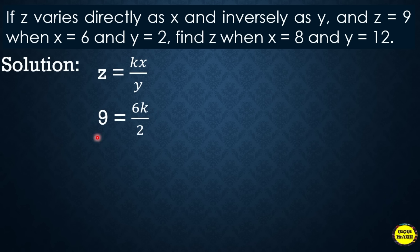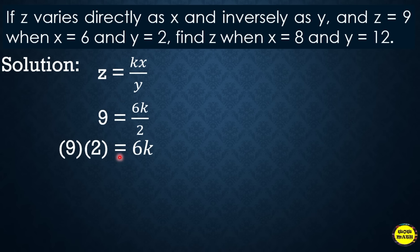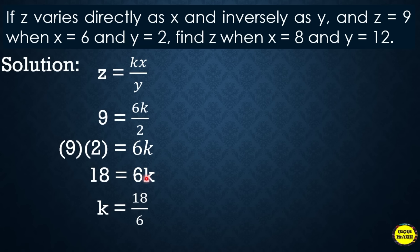To solve for K: multiply both sides — 9 times 2 equals 6K, so 18 = 6K. Dividing both sides by 6 gives K = 3. So the constant of variation is 3.